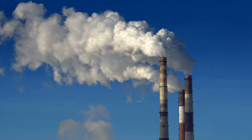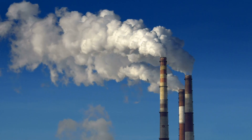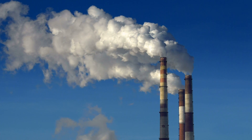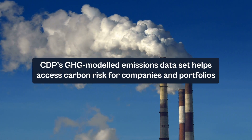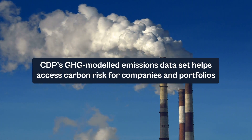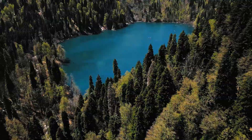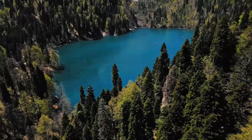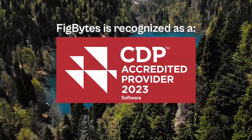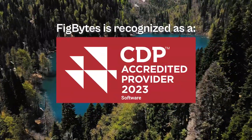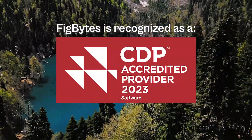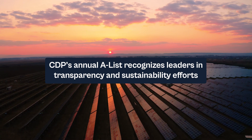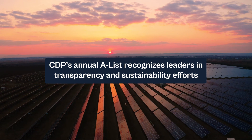CDP also developed its widely known, quality-reviewed GHG-modeled emissions dataset in 2015, which helps assess carbon risk for companies and investor portfolios. Apart from a system for disclosure, the CDP also provides a rating or scoring mechanism. The CDP score is based on the depth of disclosure and the level of company action. Their annual A list recognizes organizations leading the way on transparency and sustainability efforts.